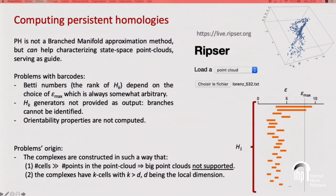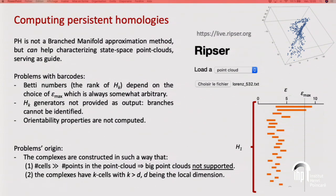Showing how to describe the Lorenz attractor with one package called RIPSER: with a 532-point cloud of the Lorenz attractor, you get a barcode in which as epsilon moves you have more and more generators. The Lorenz attractor, which has two loops, depends on the long-lasting bars — the idea being that long-lasting bars give you the correct homology of your point cloud. The problem is how long is 'long': Betti numbers depend on the choice of epsilon max, making the result somewhat arbitrary. Furthermore, H_k generators are not provided as output, so you can't see which bar corresponds to which cycle.